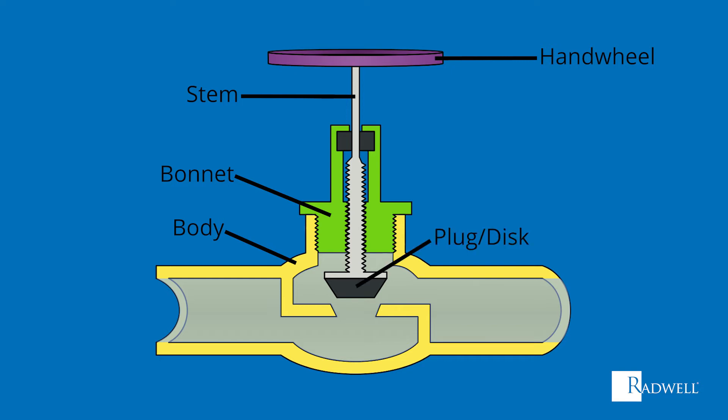The plug, also known as the disc, is connected to the stem to provide the closure of the valve. And last is the valve seat. The valve seat is what separates the inlet and outlet of the fluid flow and, when blocked, turns off and on the fluid flow.